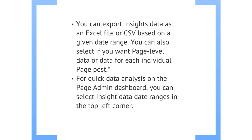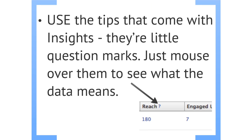You can say here's where we are, here's where we'd like to be — slap percentages on all this data and do a weekly or monthly report. So if somebody asks what are we doing with that Facebook page, are we spinning our wheels, you'll actually have information to share. You can do quick data analysis on the admin dashboard by selecting date ranges — if you think something happened during a certain time and want to see how your page fared, just choose the right dates. Finally, use the tips that come built into Insights — just mouse over that little question mark and it'll tell you exactly what that number means.